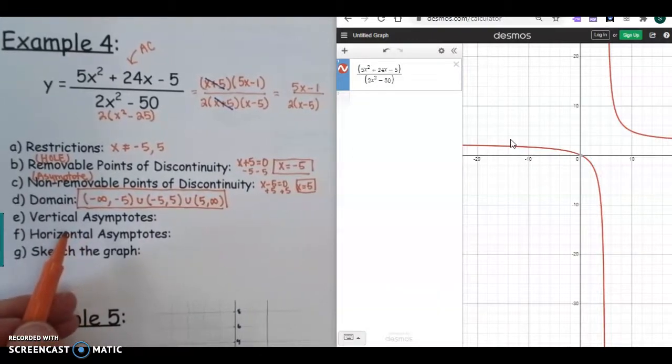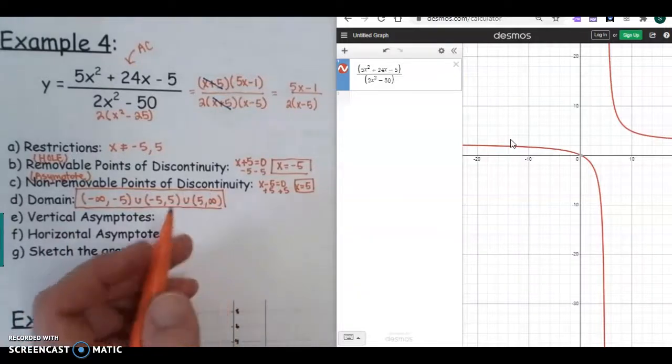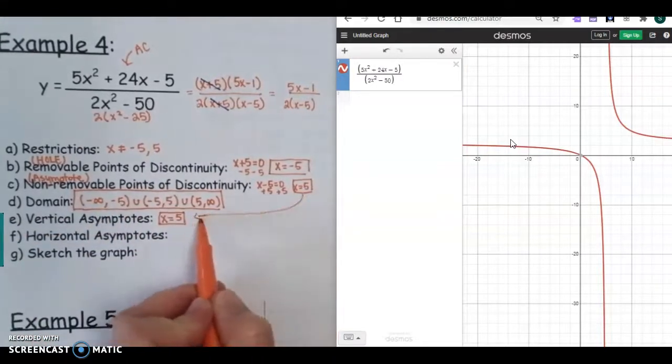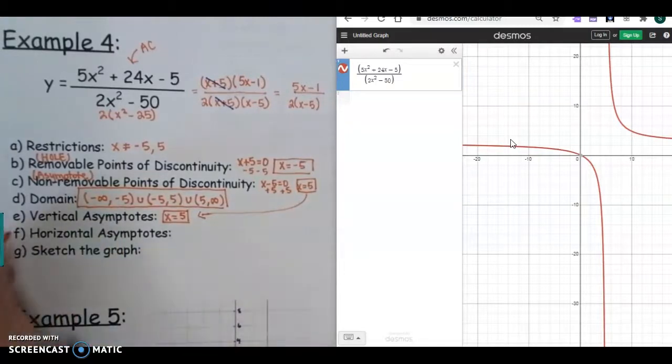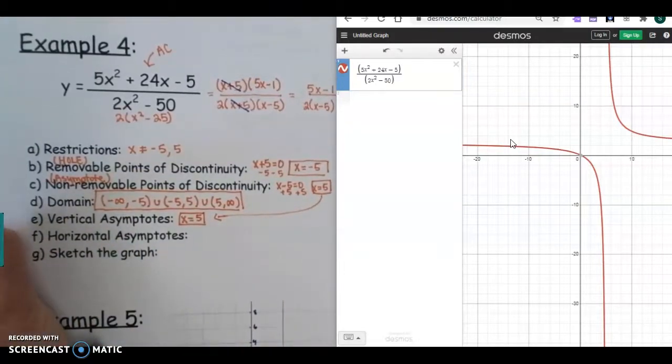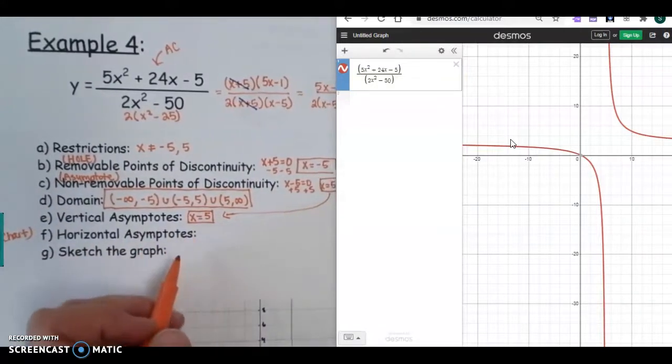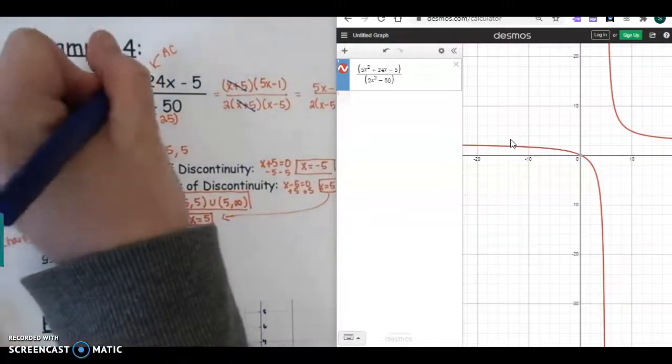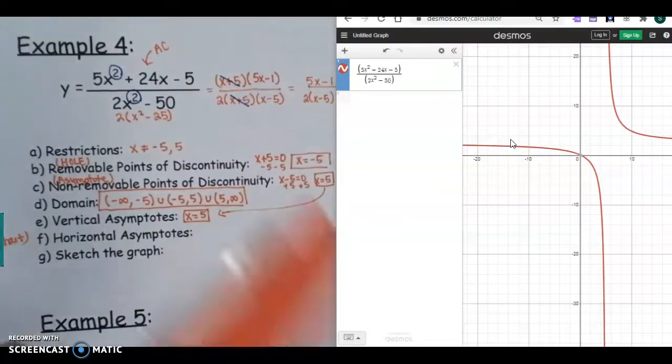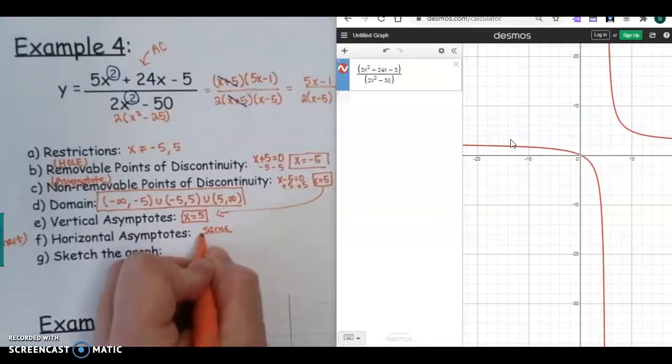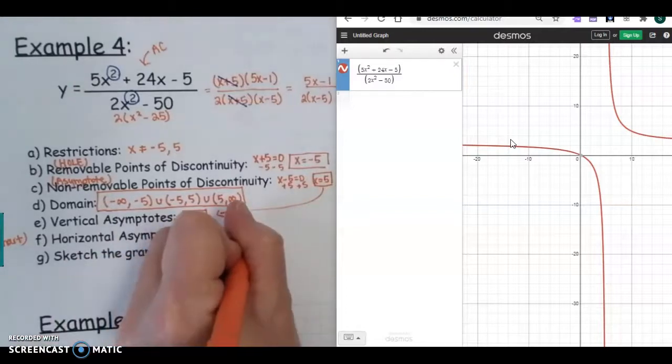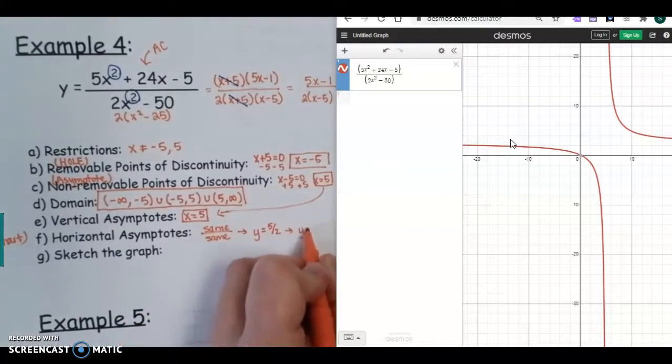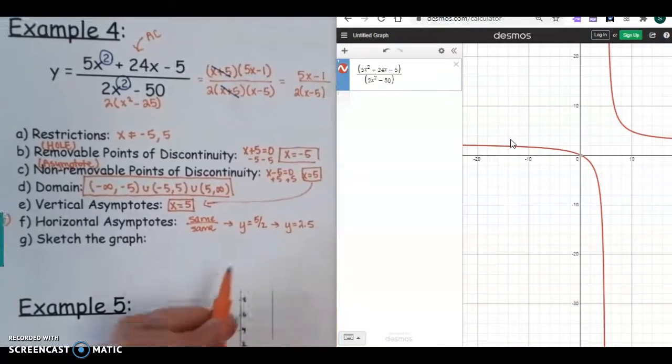So for your vertical asymptote, that's going to be the same as your non-removable. So X = 5. Horizontal comes from the chart, so I'm just going to write chart out here for you. So the horizontal, remember, is small over big, big over small, same over same. So if we look at this, you want to look at your original function. The degree of the numerator is 2. The degree of the denominator is 2. So this is same over same on the chart. So we take those leading coefficients, so that's going to be Y = 5/2. And as a decimal, that would be Y = 2.5. That might help us just a little bit when we look at the graph in just a second.